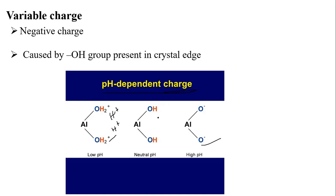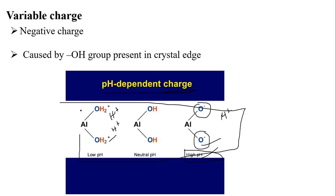In neutral conditions, all ions are neutralized. At higher pH there is no protonation, so the net negative charge remains on aluminium — giving negative charge at high pH. This reaction is completely dependent on the pH of the soil solution, unlike isomorphous substitution where pH has no role.